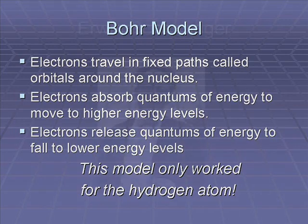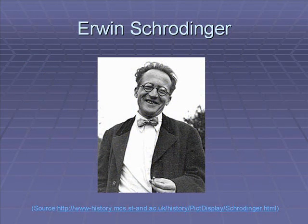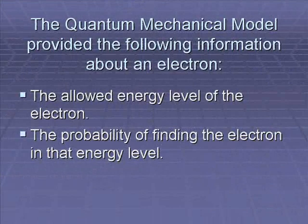The Bohr model paved the way for the quantum mechanical model, which is the model of the atom that we use today. This model, developed in 1926 by Erwin Schrödinger, came from the mathematical solutions to Schrödinger's equations. The solutions to these equations determined two things: the first was the allowed energy level of an electron, and the second was the probability of finding an electron in various locations around the nucleus. That probability density concept led to the definition of the atomic orbital, which was a region of space where there was a high probability of finding an electron.